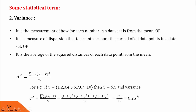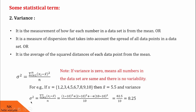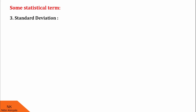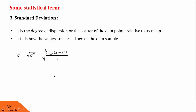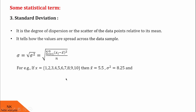Note that if the variance is 0, that is σ² = 0, it means all the numbers in the data set are the same — there is no variability. Now the third statistical term is standard deviation. It is the degree of dispersion or the scatter of the data points relative to the mean, and it tells us how the values are spread across the data sample. It is given by σ, which is the square root of σ², defined as √[Σ(xᵢ − x̄)² / n]. For the same set, mean is 5.5 and variance is 8.25, so the standard deviation is √8.25 = 2.872.